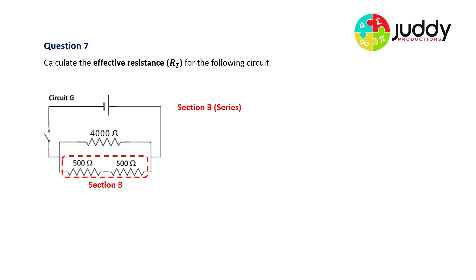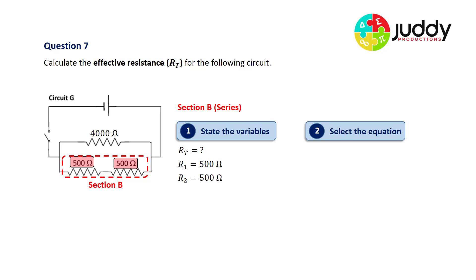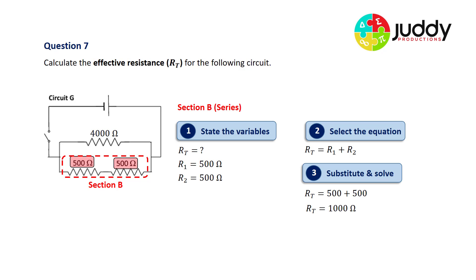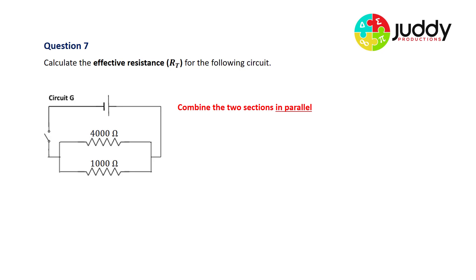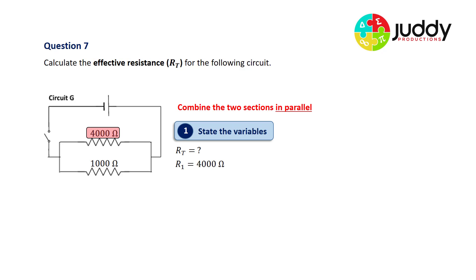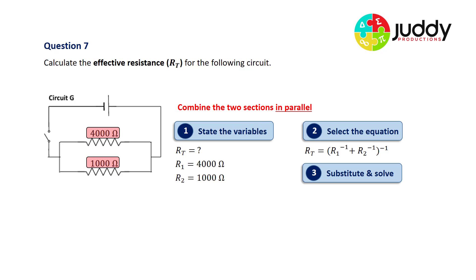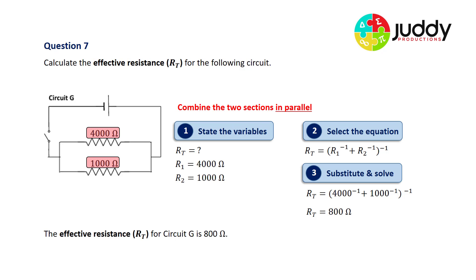Section B has two 500 ohm resistors in series. R1 is 500 and R2 is 500. Since they're in series, we simply add them: 500 plus 500 gives a total effective resistance of 1,000 ohms for that branch. Now we have two resistors in parallel: 4,000 ohms and 1,000 ohms. Using the parallel equation and substituting R1 as 4,000 and R2 as 1,000, we get an effective resistance of 800 ohms. The effective resistance for circuit G is 800 ohms.